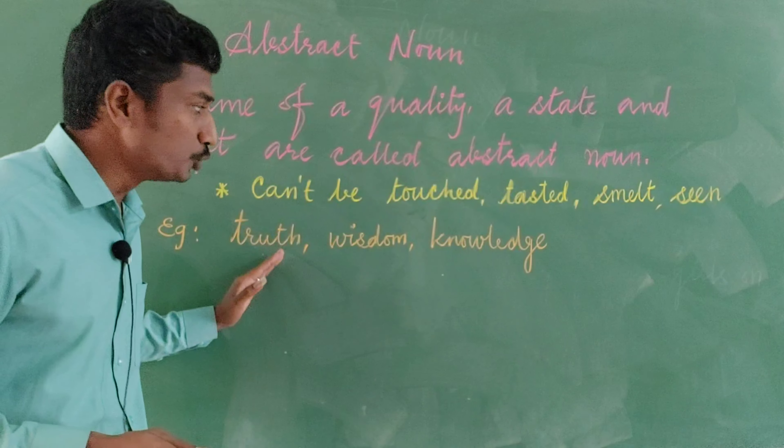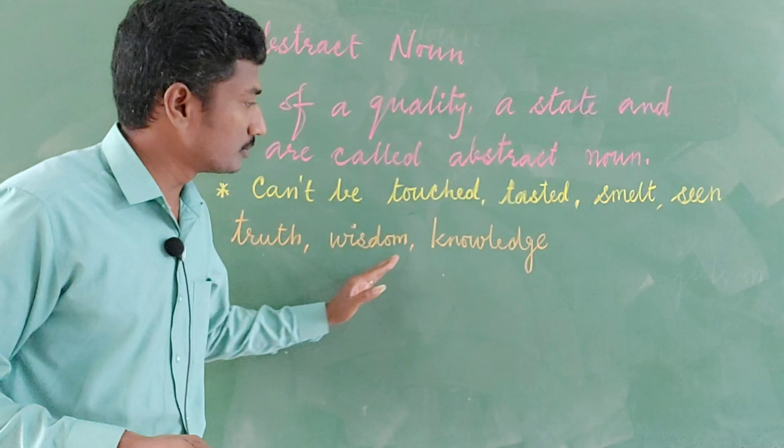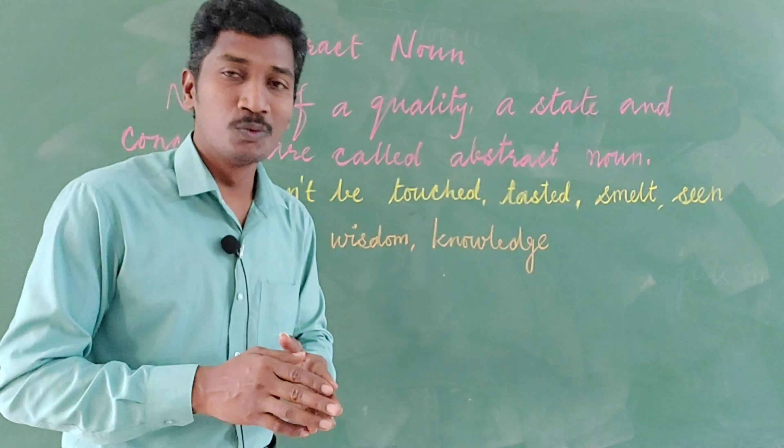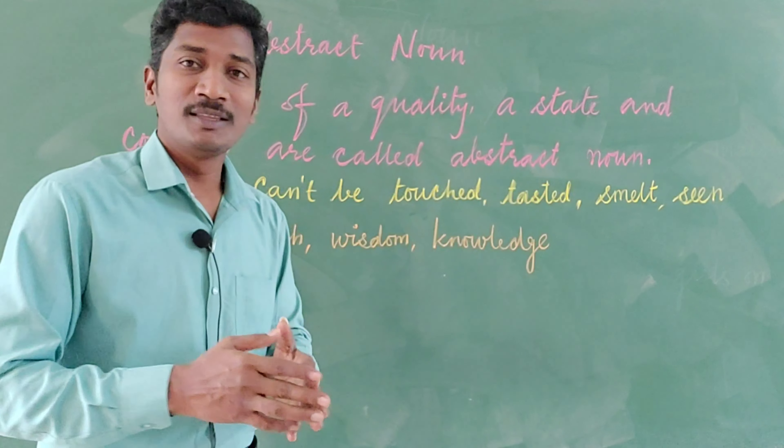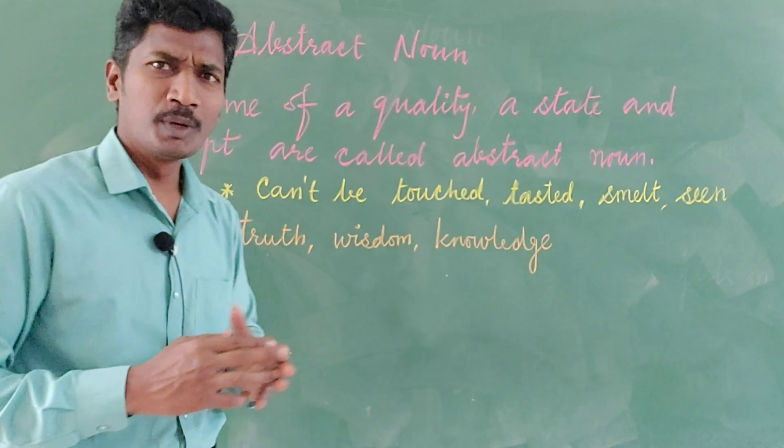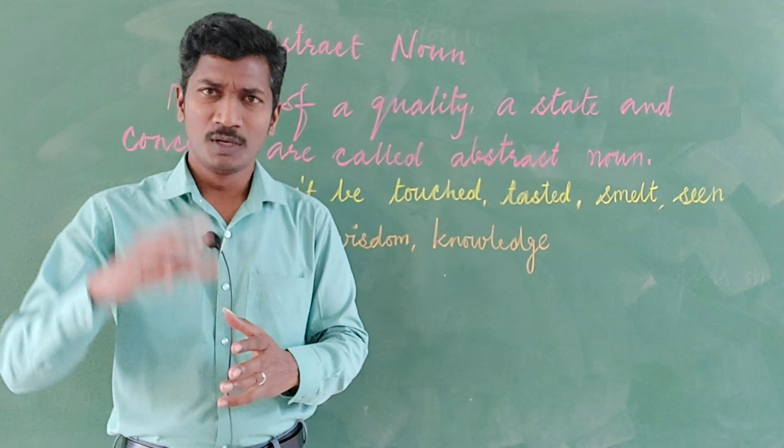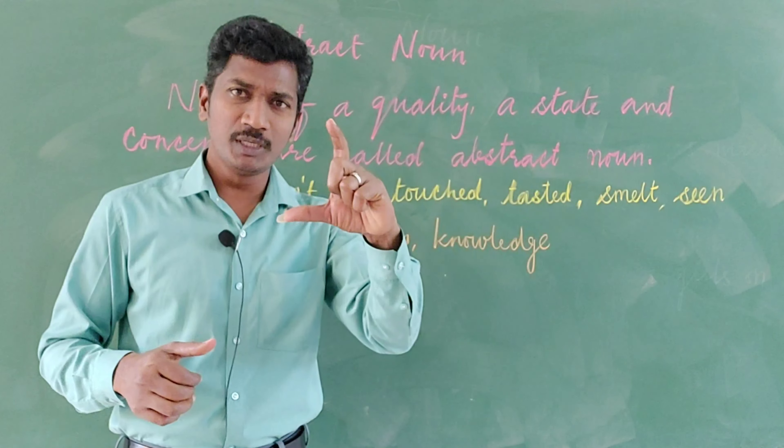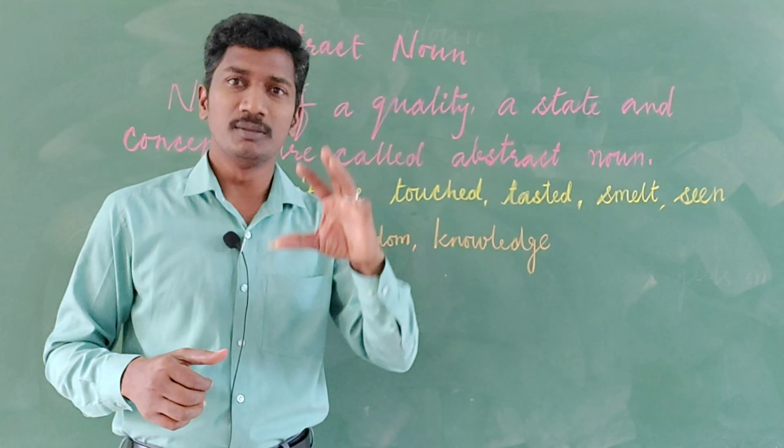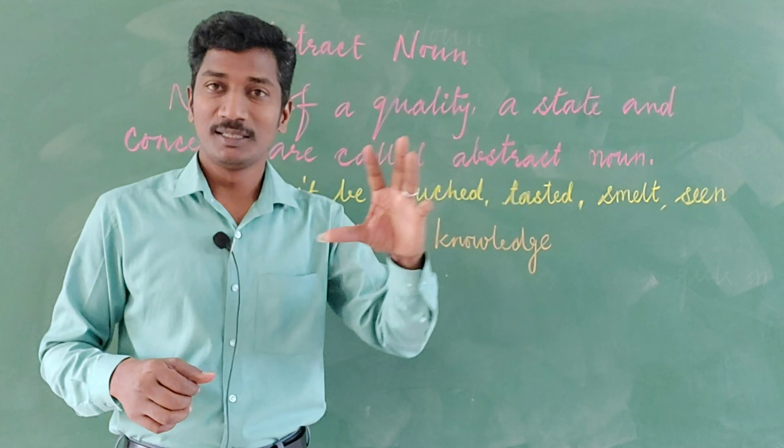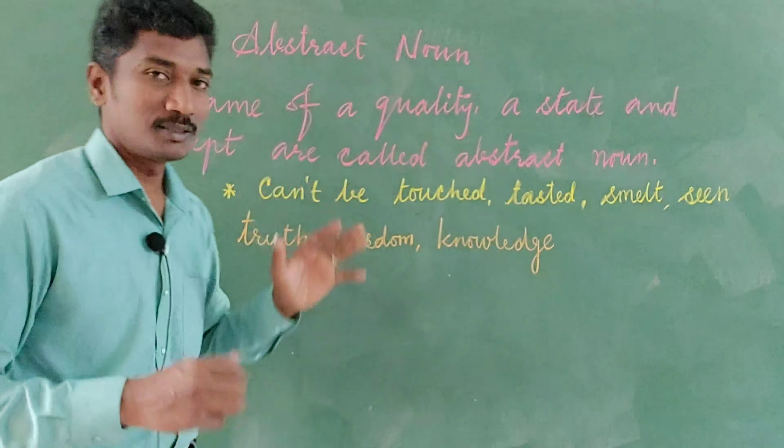Examples like truth, wisdom, knowledge, strength, love, bravery - these all we can bring under abstract noun. I hope you understand what abstract noun is. First try to understand the word abstract. Abstract means which is not visible, it cannot be seen, it has to be just felt.